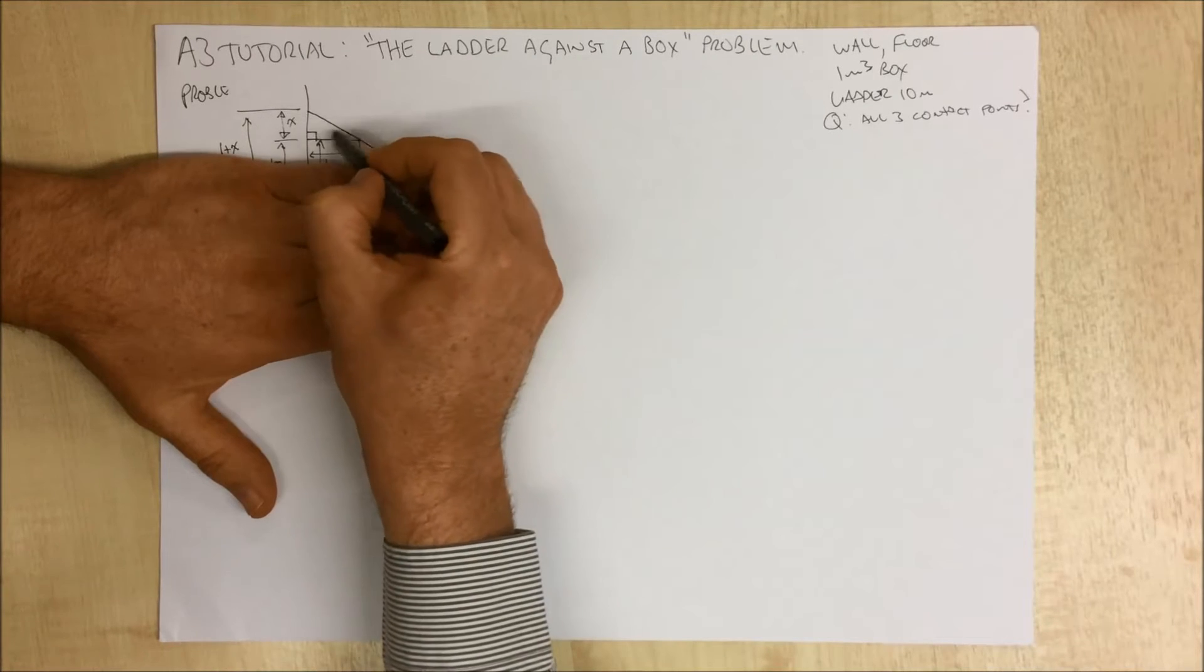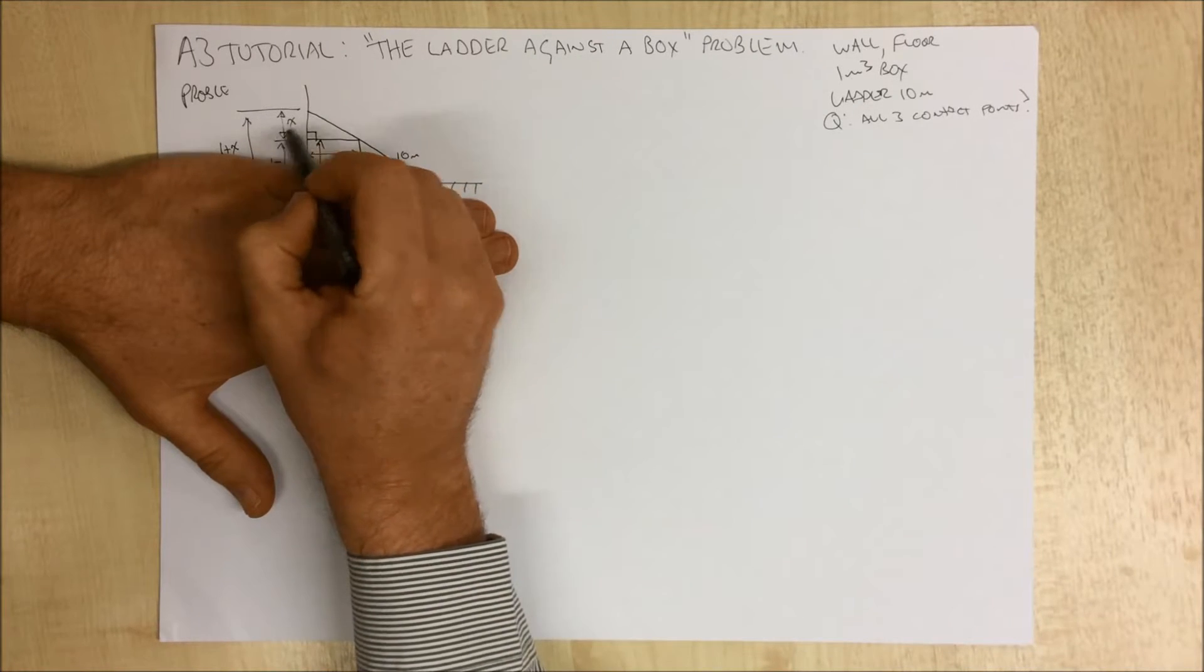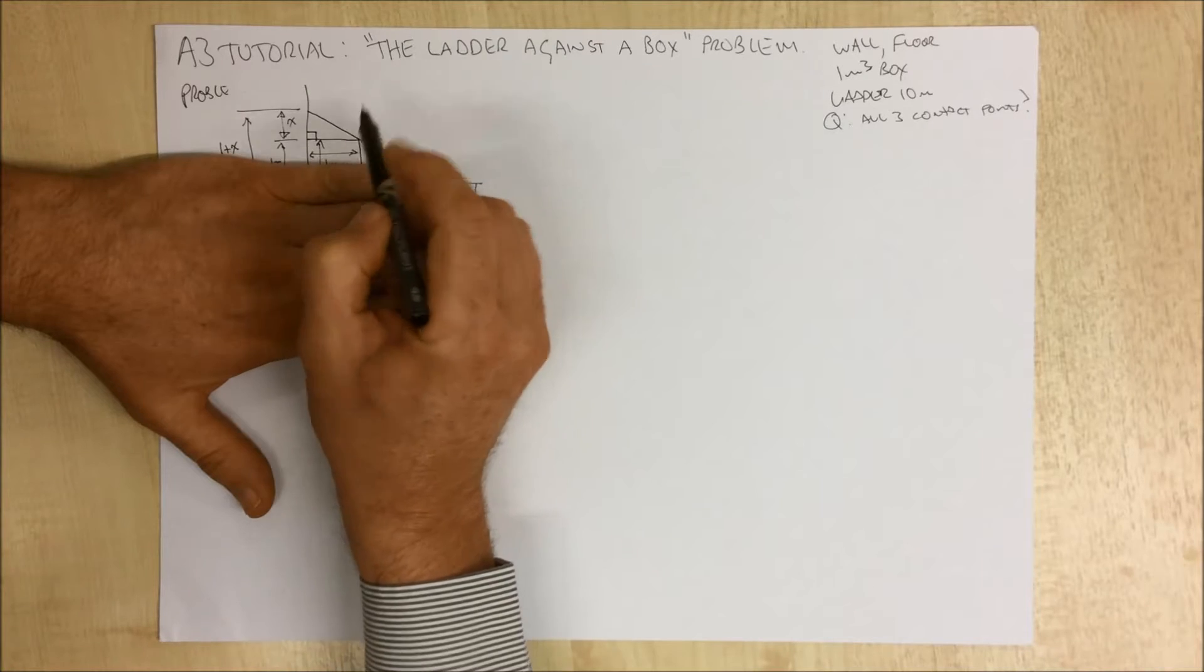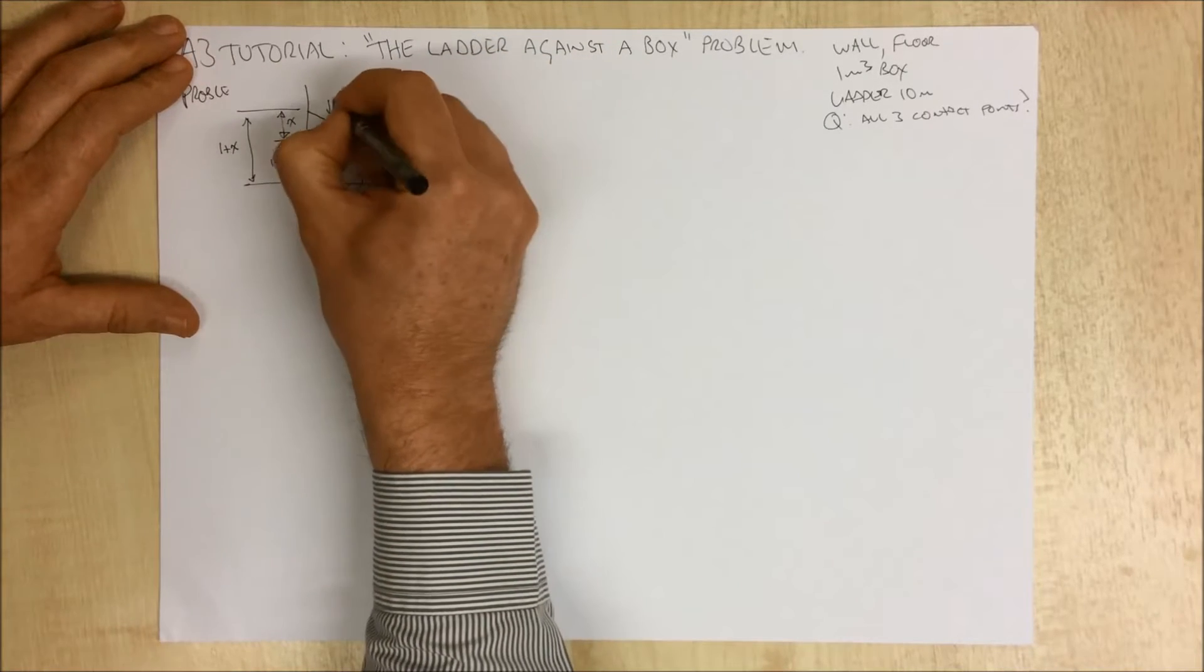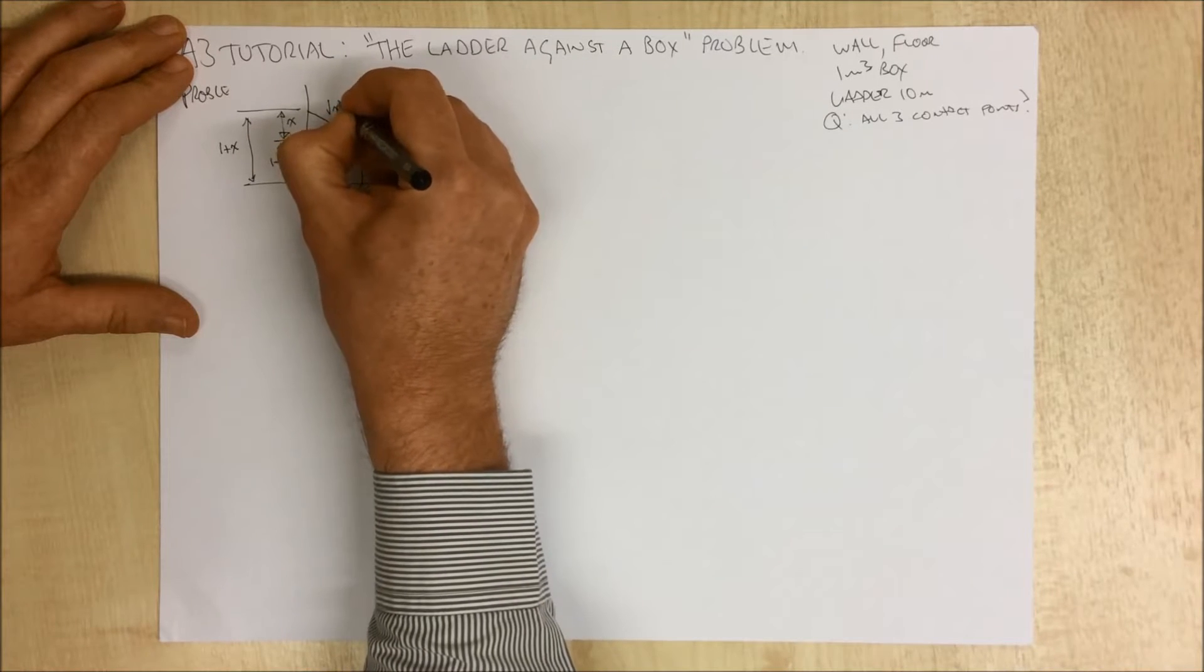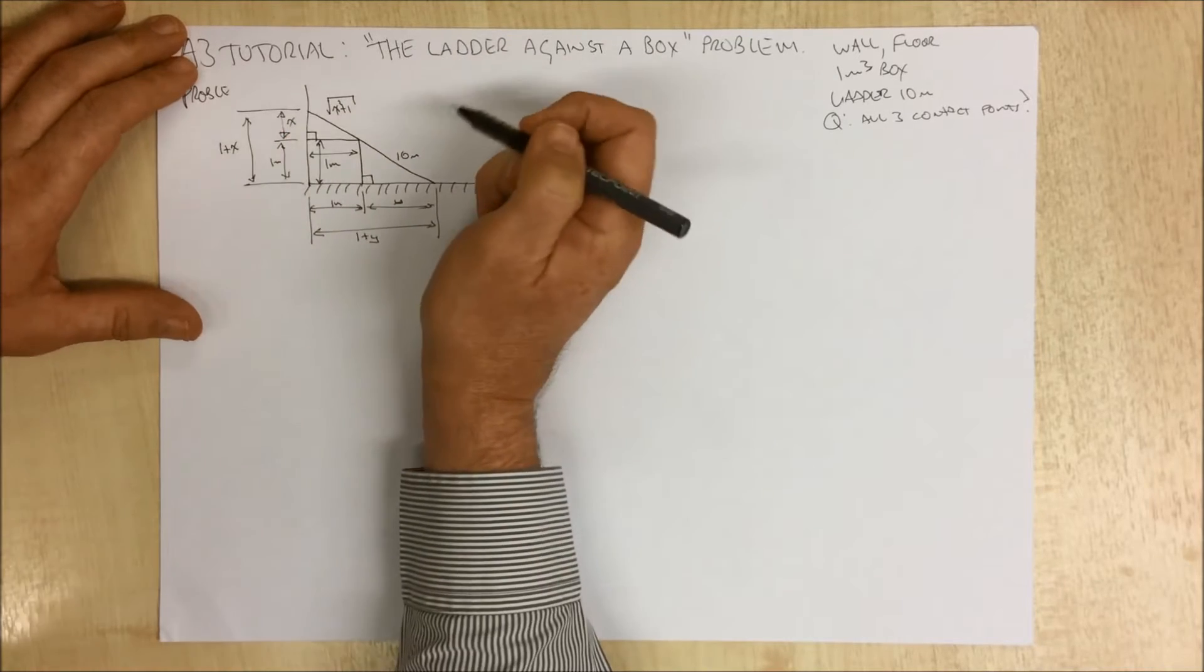But what we can do is apply Pythagoras' theorem here because we've got this triangle, this length of x, this length of 1. Therefore Pythagoras' theorem tells us that this distance here is the square root of x squared plus 1.